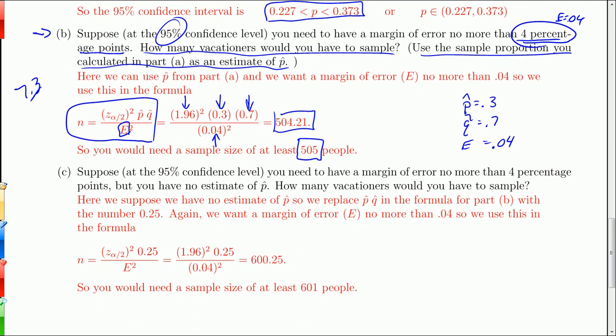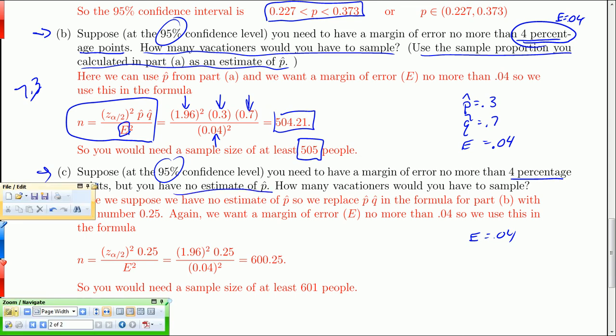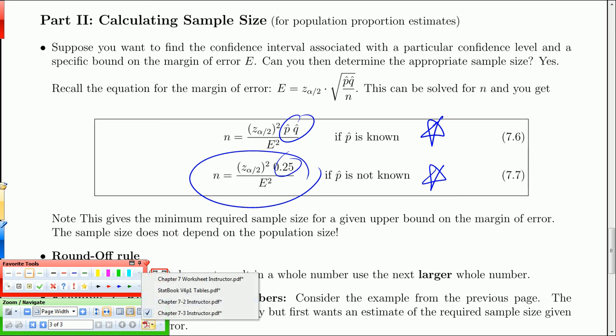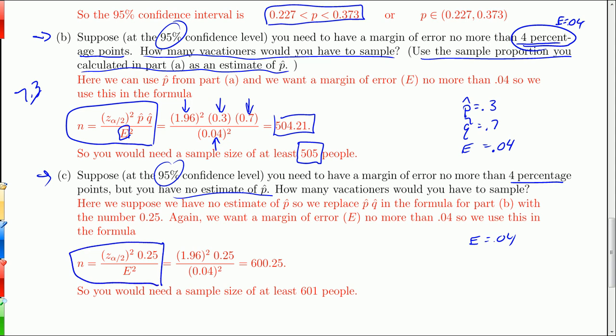Now we're looking at the same confidence level. You need to have a margin of error no more than 4 percentage points again. So again, E equals 0.04. But in this case, you have no estimate of P hat. So what that means is we have to use that second formula from chapter 7.3. When P hat is not known, I'm going to use this one. And all that does is change the P hat times Q hat here into a 0.25. So we'll go back to the worksheet here. There's that formula. Again, at the 95% confidence level, the critical value is 1.96 found from the Z table. 0.25 replaces P hat times Q hat. There's my max margin of error. And when you do that, you get 600.25. Got a little bit bigger because I didn't know P hat or Q hat. And again, rounding up, you'll need at least 601 people in your sample.